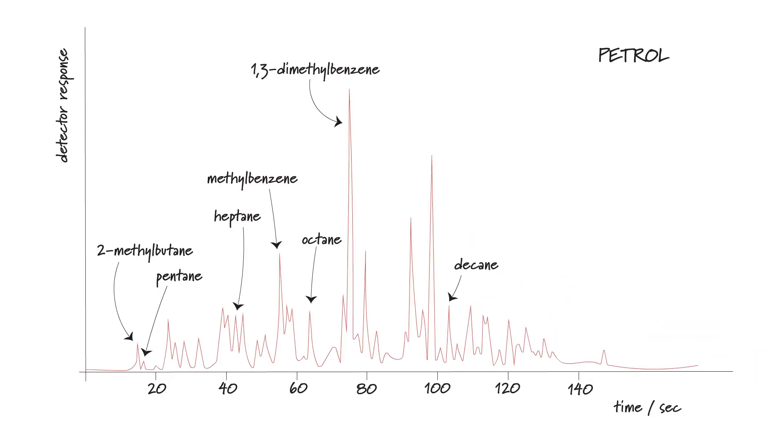The result of this separation is a computer generated chromatogram showing a number of peaks and each peak corresponds to one of the substances in our mixture.